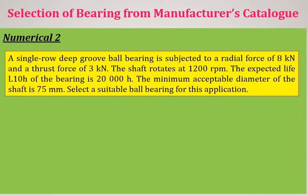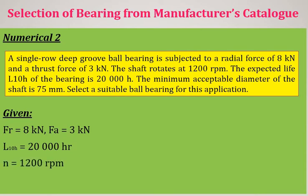Numerical 2 involves more detailed calculation including trial and error. A single row deep groove ball bearing is subjected to a radial force FR = 8 kN and a thrust force FA = 3 kN. The shaft rotates at 1200 RPM. The expected life L10H = 20,000 hours, and the minimum acceptable shaft diameter is 75 mm.